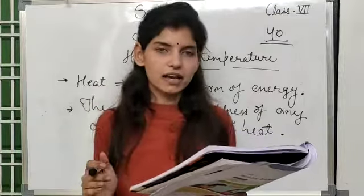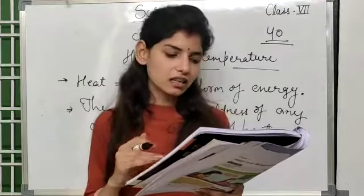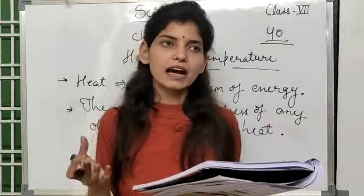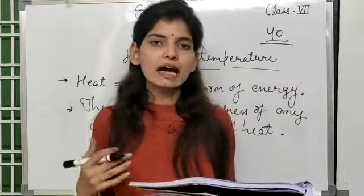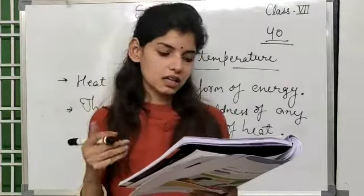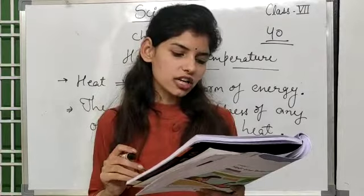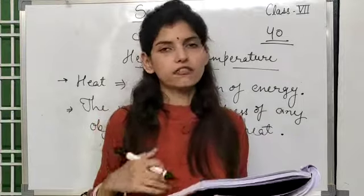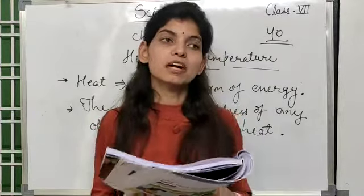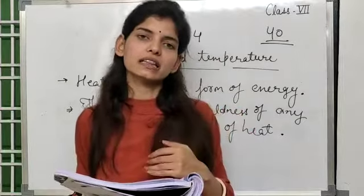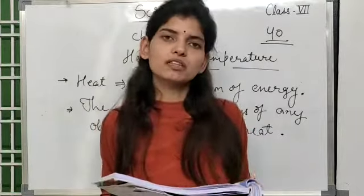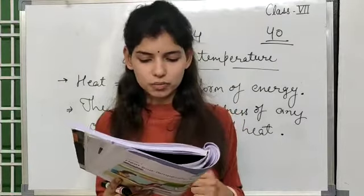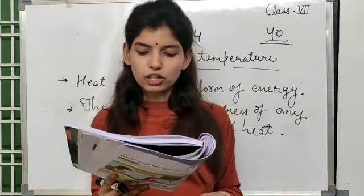For example, when we stand near a fire or touch a pot kept on a gas stove, we feel a sensation of hotness. Similarly, when we touch an ice cube, we feel coldness. Because when an object is hot, our hands receive heat from it, and therefore we feel warmth. And we feel cold when heat passes from our hands to the object.